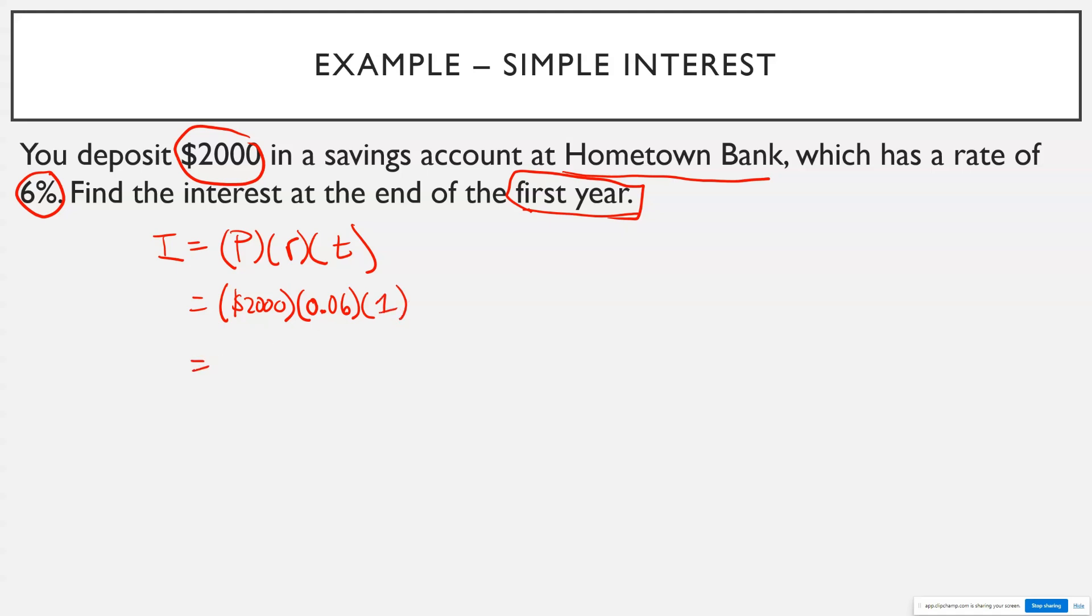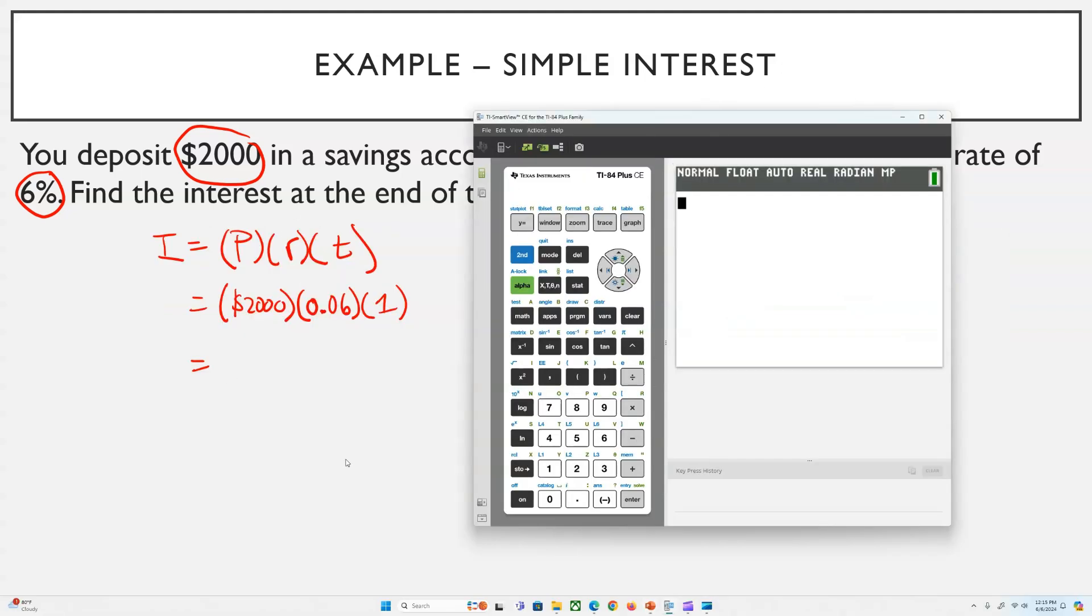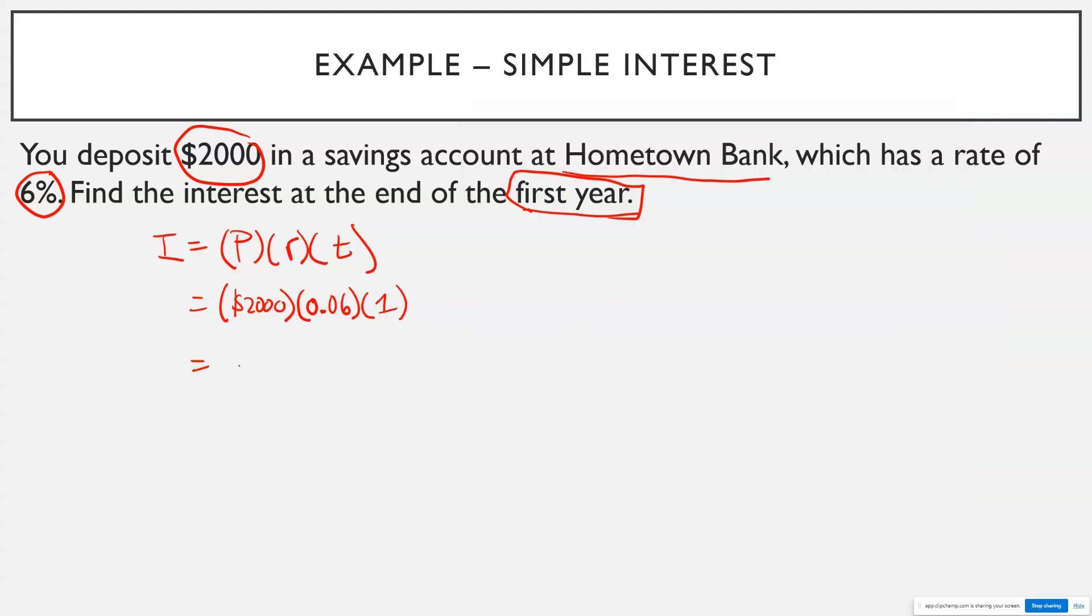If you need your calculator for this, that's okay. I'm going to grab our TI calculator here. And all I'm going to do is I'm going to take my $2,000, multiply it by that 0.06, and then I'll even multiply it by one just so you can see. And basically, at the end of the first year, the bank is going to give you $120 for having deposited that $2,000 into the bank.